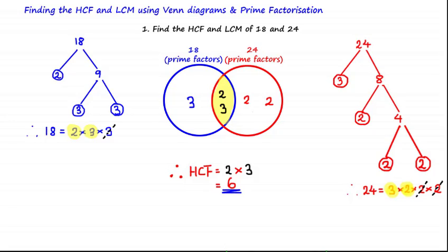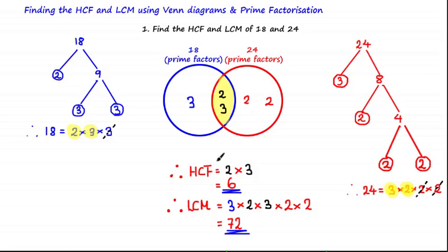In order to find the lowest common multiple, all we need to do is multiply all the numbers in the Venn diagram. Therefore the lowest common multiple is equal to 3 multiplied by 2 multiplied by 3 multiplied by 2 multiplied by 2, which equals 72. This method can be more efficient than listing out factors and multiples, and we'll see this in future examples.